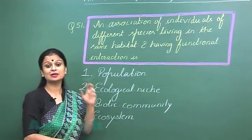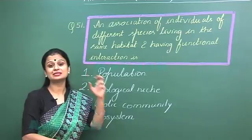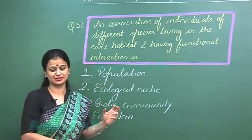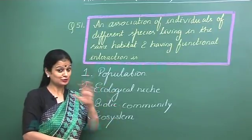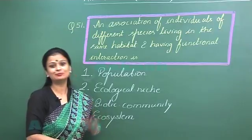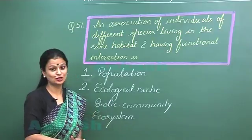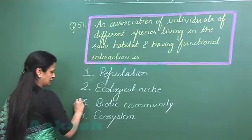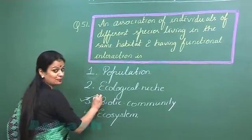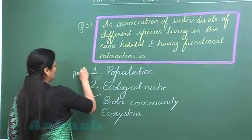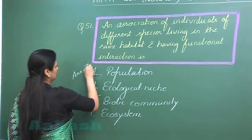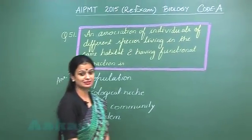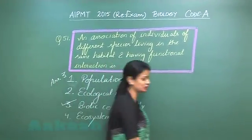So in this question it has been asked about the assemblage of different species, and the non-living component has not been included. So the right option here would be option number 3 — the answer is 3 for question number 51. Now let's discuss question number 52.